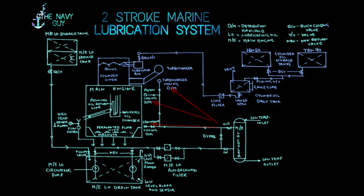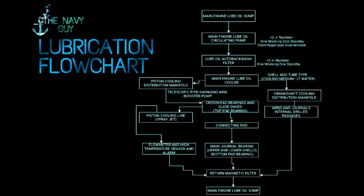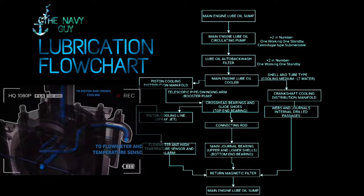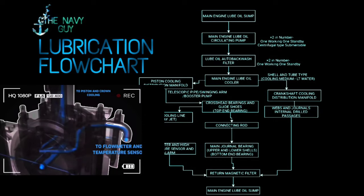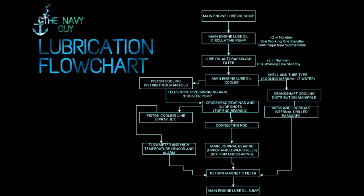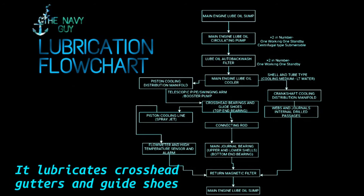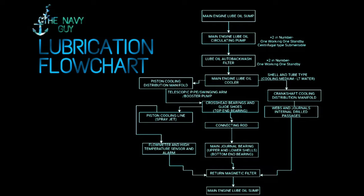From there, the pipeline is distributed into three distribution manifolds: the crankshaft cooling distribution manifold, the piston cooling distribution manifold, and the turbocharger cooling distribution manifold. For the piston cooling distribution manifold, oil goes to the crosshead bearing via telescopic pipe or swinging arm, or a dedicated booster pump at a pressure of about 2.5 bar. It lubricates the crosshead gutters and guide shoes, while some oil is forced upwards via drilled passages in the piston rod right up to under the piston crown.